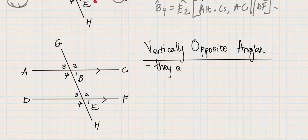They are equal. That's all. Vertically opposite angles, they don't need parallel lines, they don't need anything. We just know that vertically opposite angles are equal.